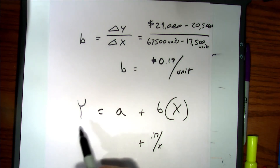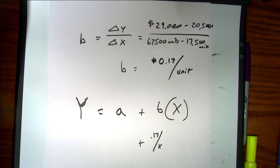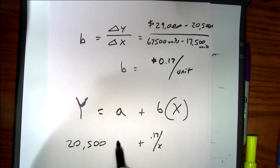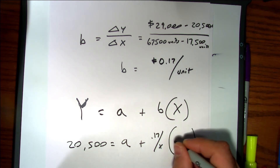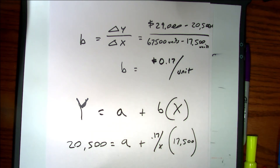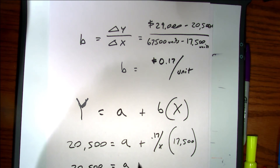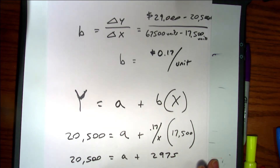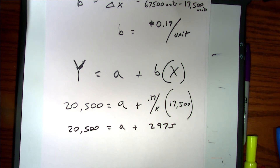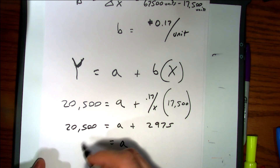What is y at the low point? $20,500. What is x at the low? 17,500 units. So we get: 20,500 equals A plus 0.17 times 17,500, which equals 2,975. So 20,500 equals A plus 2,975 — therefore A equals $17,525.